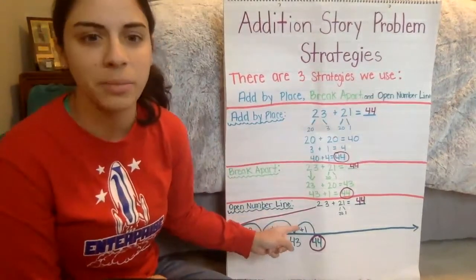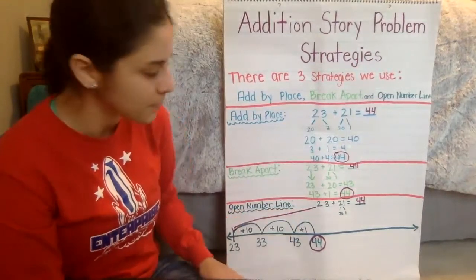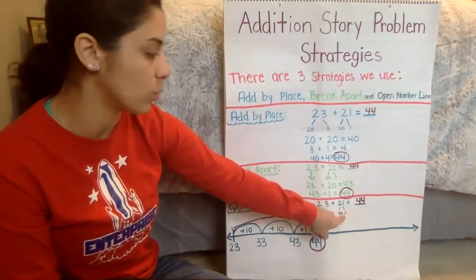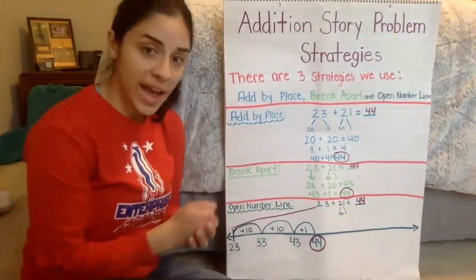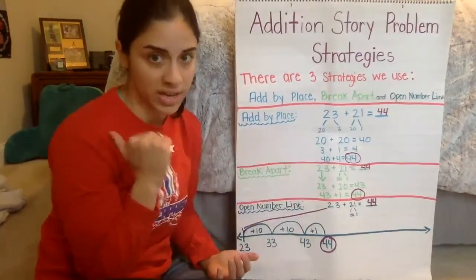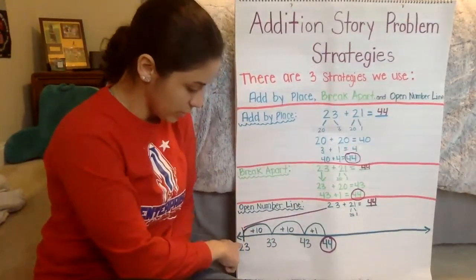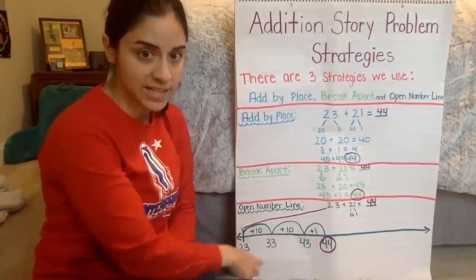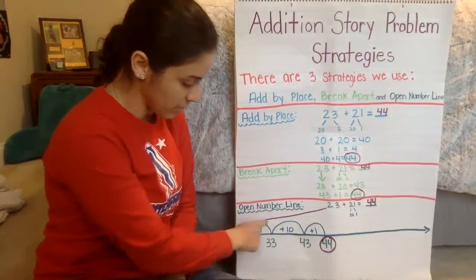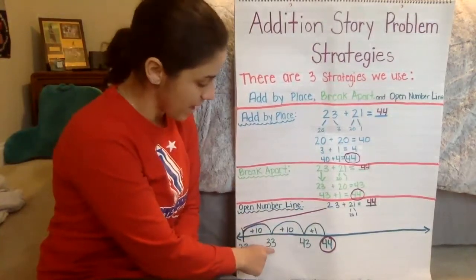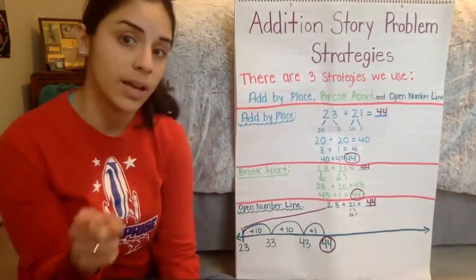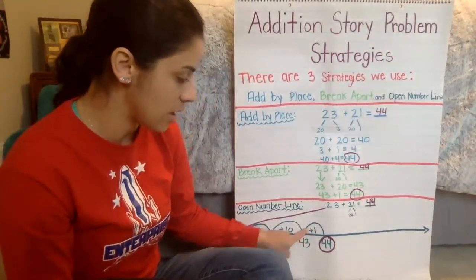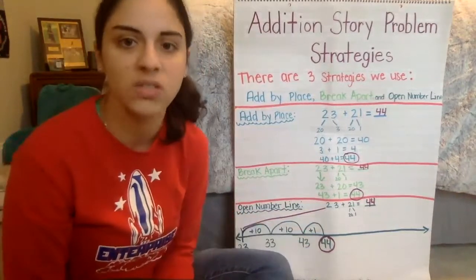And then the last strategy, open number line, sometimes we call it empty number line. We break apart 21 again, so 20 is how many tens and one one, and because we're adding, we're going to start on the left, because we're going to go forward and not backwards. So we're going to start with 23, and because there are two tens in 21, we're going to do two big jumps, adding 10 each time. So 23 plus 10 is 33, and 33 plus 10 is 43, and we're not done yet, because we have to add the ones still. So we're going to add one little hop and add one. 43 plus 1 is 44.